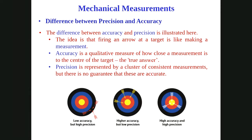Consider a target analogy: if you throw arrows and they land far from the bullseye but close to each other, you have high precision but low accuracy. If the arrows are close to the target but spread apart, you have high accuracy but low precision. If all arrows are both close to the target and close to each other, you have high precision and high accuracy — this is the ideal case.